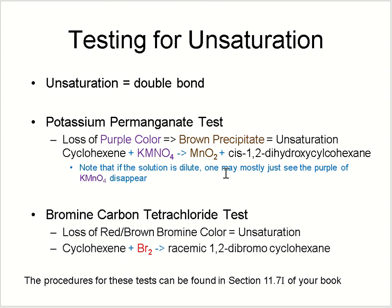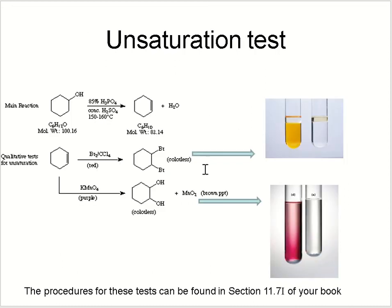To verify your product is cyclohexene and contains a pi bond, you can use unsaturation tests. You can use potassium permanganate or bromine in carbon tetrachloride solution. If you use the potassium permanganate test, the purple color will be lost due to the unsaturation — the purple color will disappear if your cyclohexene has formed. You can also use the bromine in carbon tetrachloride test, where the loss of bromine color proves that the product has a pi bond.